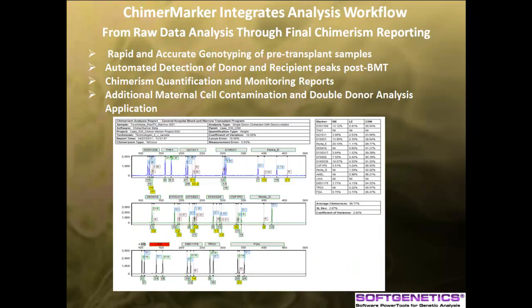For chimerism analysis of post- and pre-transplant samples, the software automatically detects donor and recipient peaks and uses this information to quantify percent chimerism by height or area. The results can be displayed in percent donor or percent recipient in a comprehensive summary report. Additional applications include maternal cell contamination and double donor chimerism analysis. Please see a separate webinar for more information on these applications.